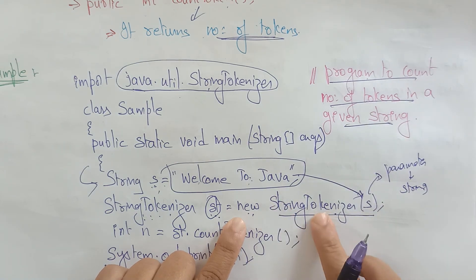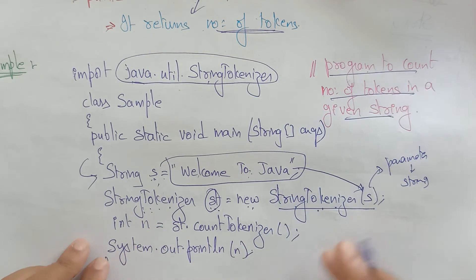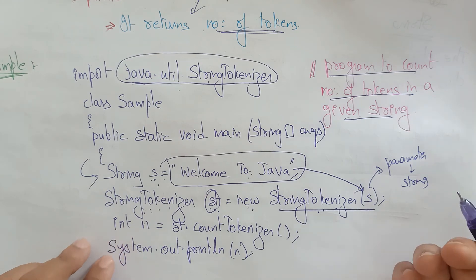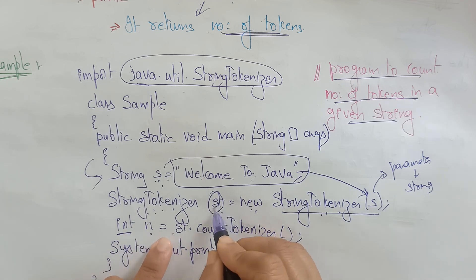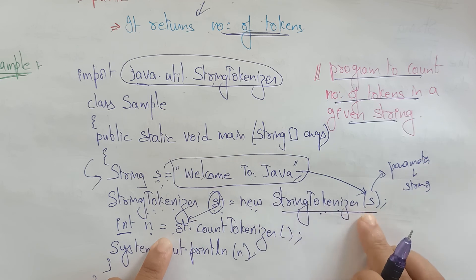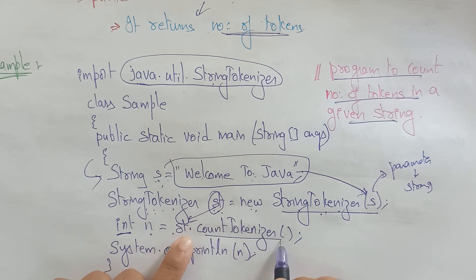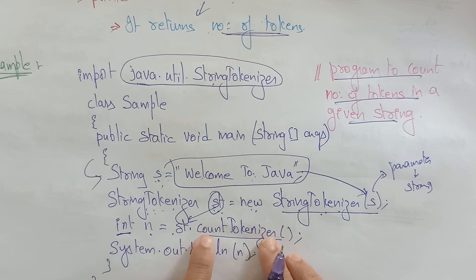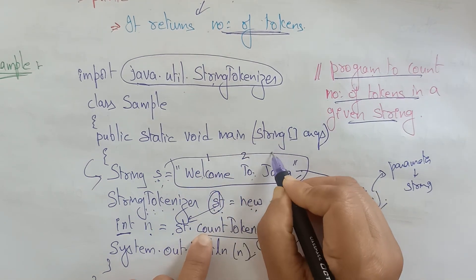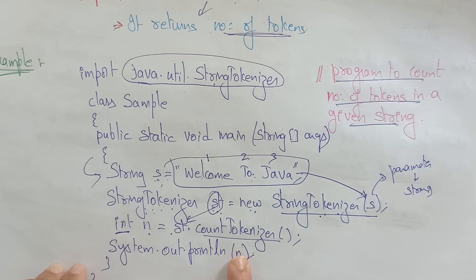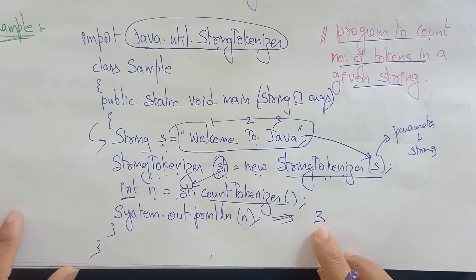Now count the tokens. The return type is int, so: int n = st.countTokens(). Since 'welcome' is token one, 'to' is token two, and 'java' is token three — three tokens are stored in n, which is then printed. So the output is 3 — that is the program to count the number of tokens in a given string.